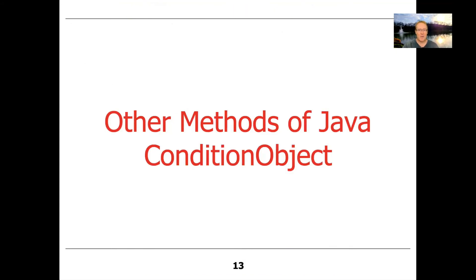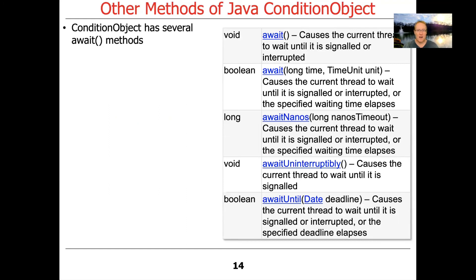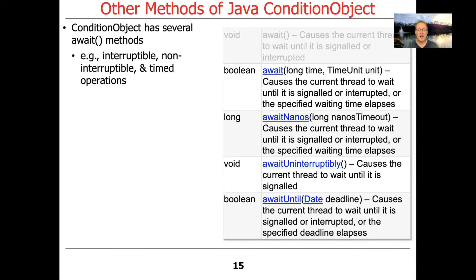There are other methods in the Java condition object interface — a number of variants of await. By default, await is interruptible. You can also have uninterruptible awaits where you cannot be interrupted. There are also timed operations that take either milliseconds, microseconds, or seconds as the time unit. There's also a nanosecond await, and another await that uses a date, so you can schedule something like a calendar operation to wake you up at some point in the future based on day of the week, year, and so on.